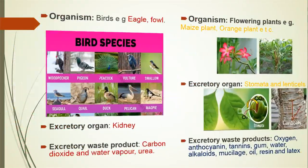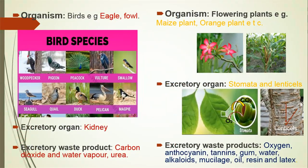The next organism is birds. Examples include eagle, fowl, peacock, pigeon, duck, and so on. They also use kidneys as their excretory organ. Excretory waste products include carbon dioxide, water vapor, and urea.